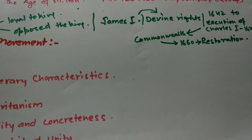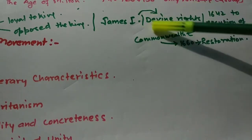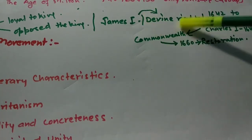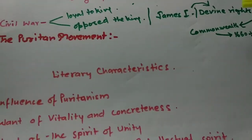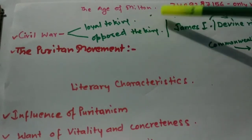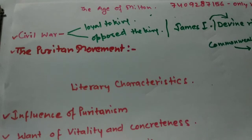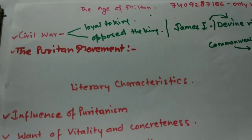James the First started to ignore the parliament and thought himself the sovereign, following divine rights. This led to conflict that started in 1642. In the civil war, there were two fractions of society: those loyal to the king who believed in divine rights, and those opposed to him.